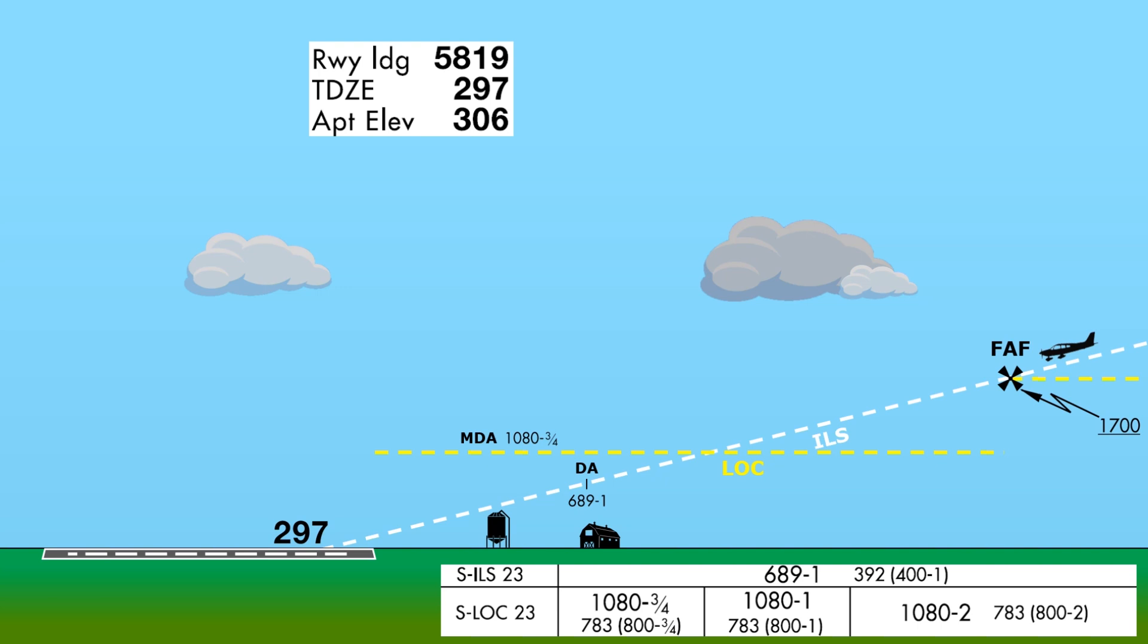Now notice the visibilities. The non-precision localizer only requires three-quarters of a mile visibility for CAT A aircraft, while the precision ILS approach requires a full mile. It's more restrictive.